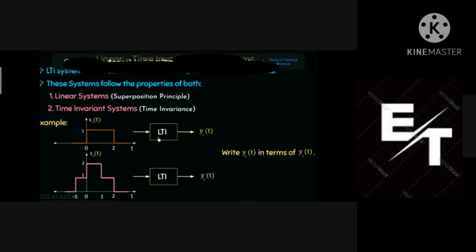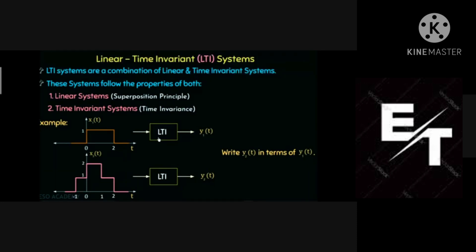Now let me take an example for linear time invariant systems. If x1(t) is an input to an LTI system, we get y1(t). Similarly, if x2(t) is an input to another LTI system, we get y2(t). Then if we add x1(t) plus x2(t) as input, we get y1(t) plus y2(t) as output — both inputs added means outputs also added.